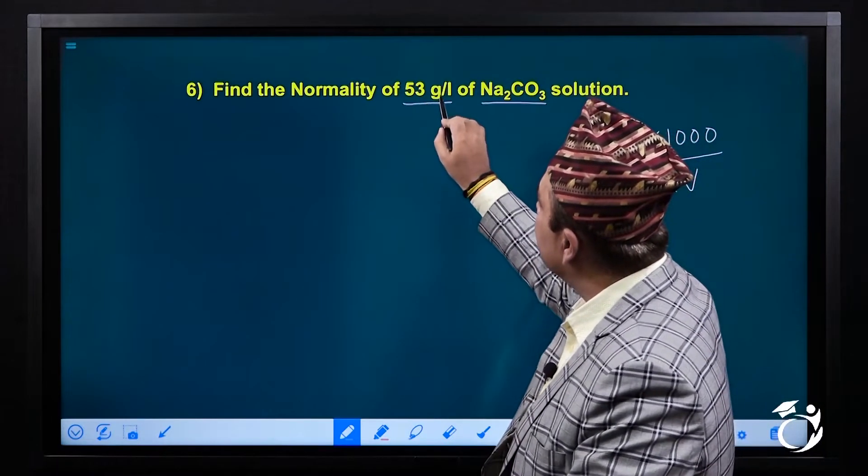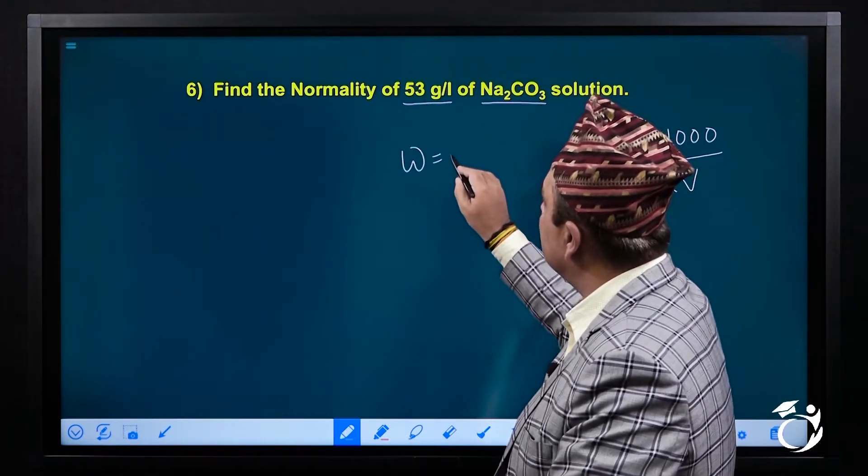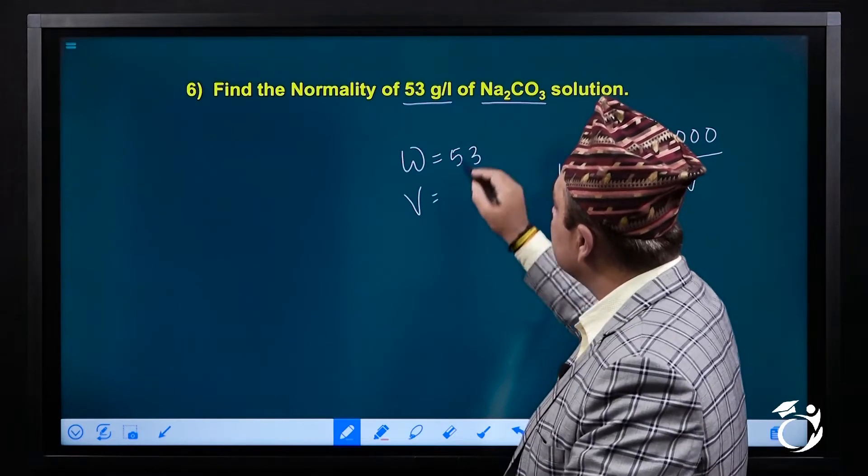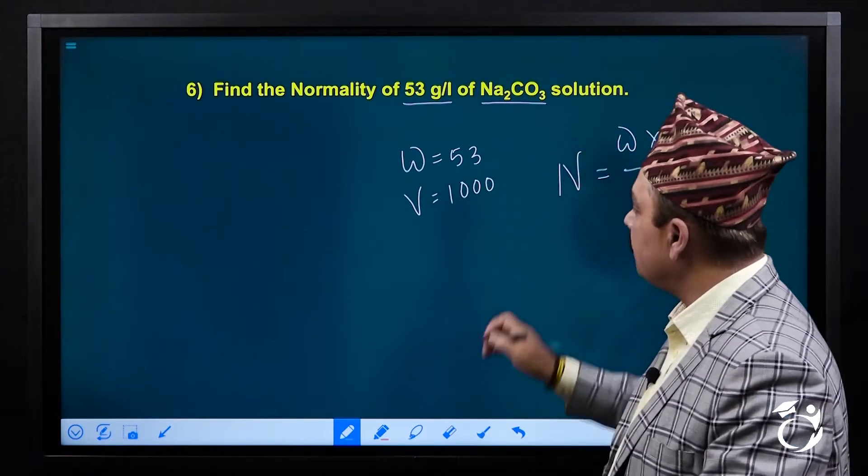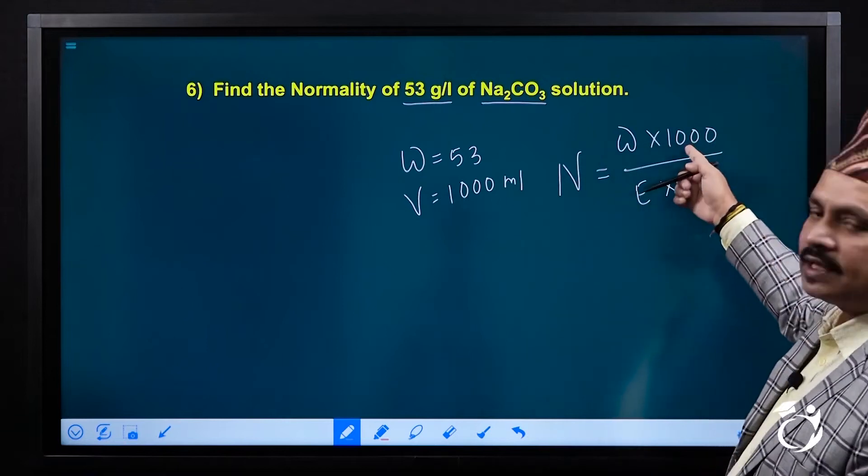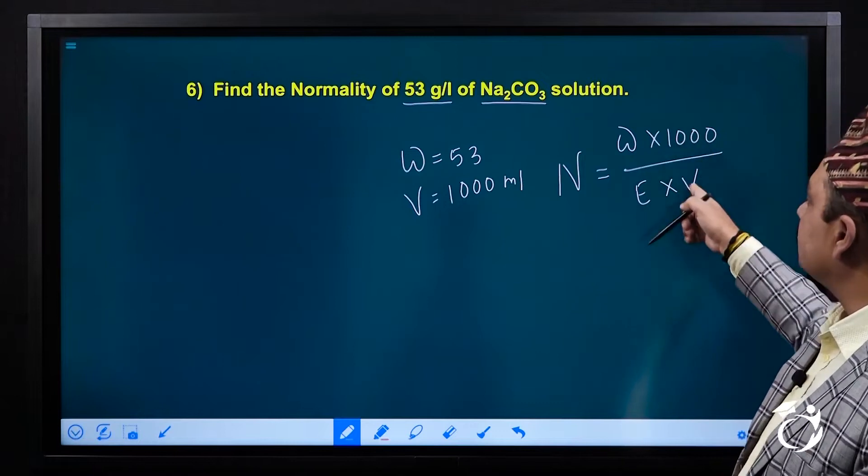So 53 gram per liter is equal to weight equal to 53 gram and volume is equal to 1 liter. 1 liter being 1000 ml. How does 1000 convert into ml? It's 1000 in liter and it's 1000 in ml.